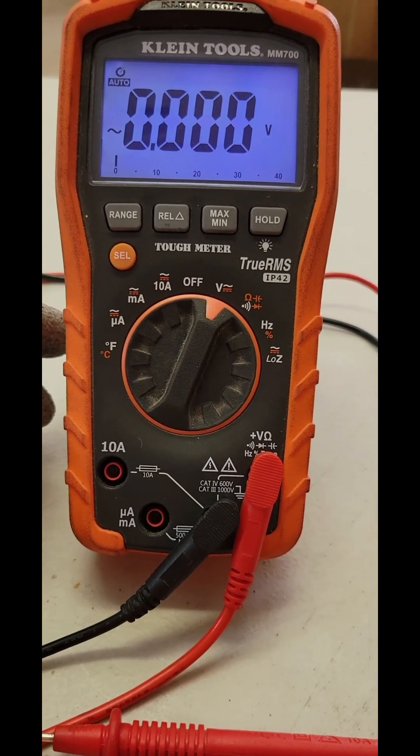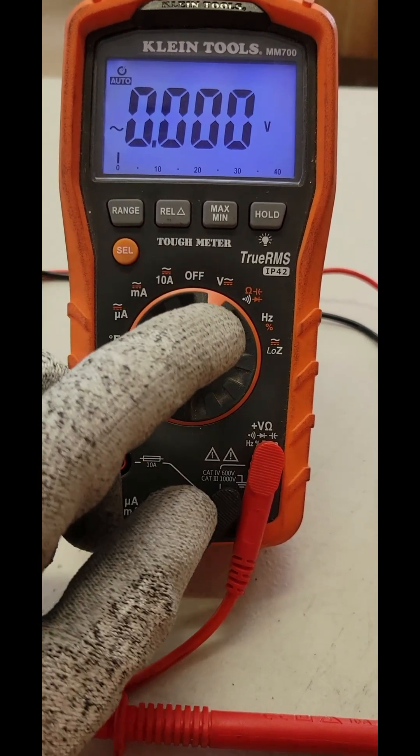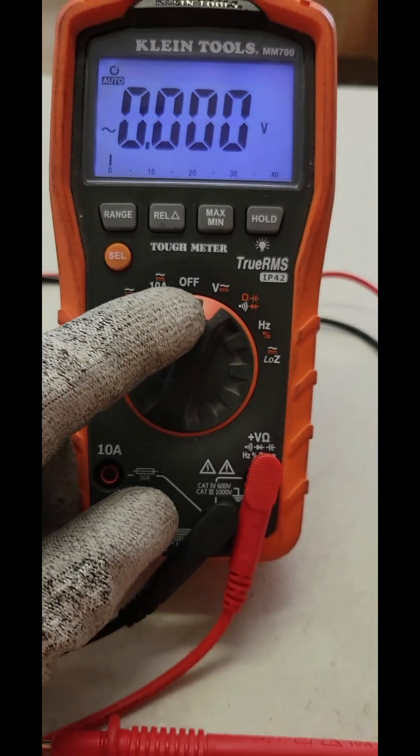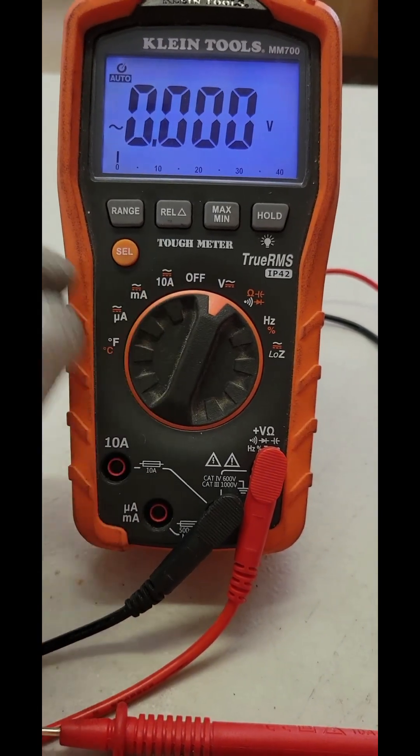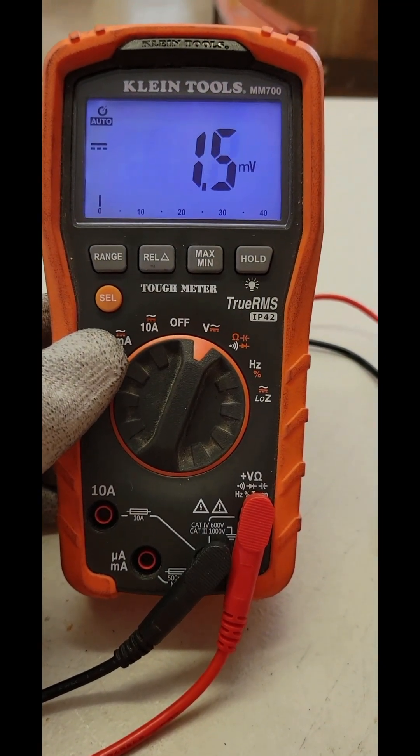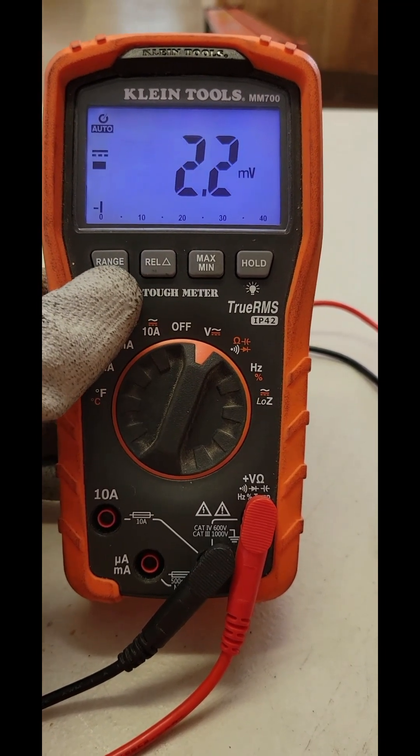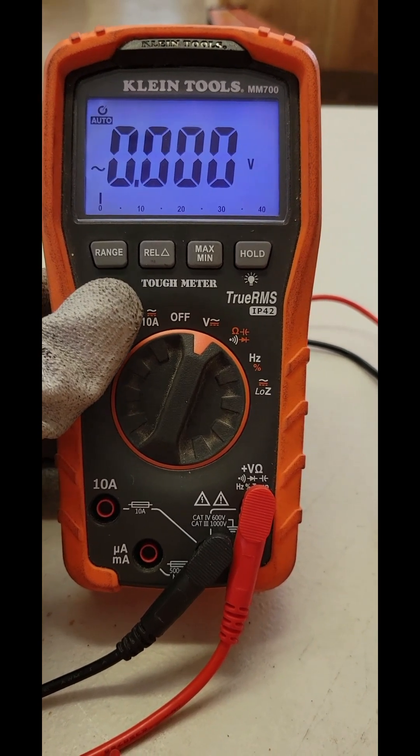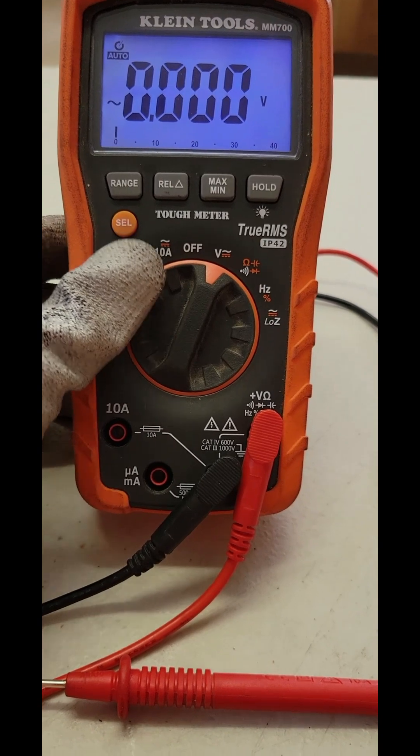Now you've got two types of voltage. You've got DC and AC. DC current is going to be the solid line with the dots below it. To change on this multimeter, you hit select and now it's trying to read DC voltage. You hit select again and you go to AC voltage.